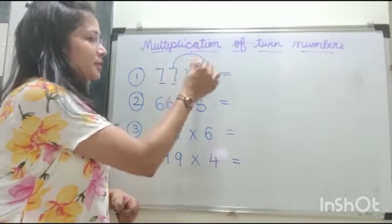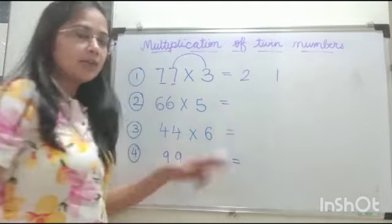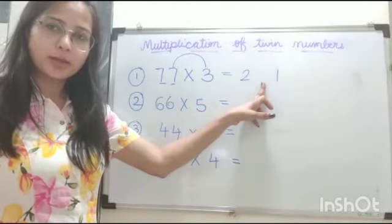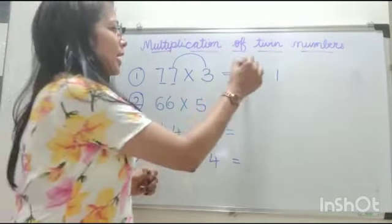Step number 1: Multiply 7 by 3, that is 21. Leave a space in between for the middle number. Step number 2: Add 2 plus 1, that is 3. So this is your answer, 231.